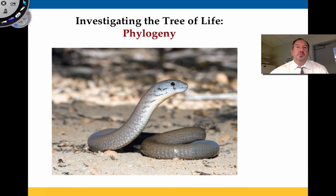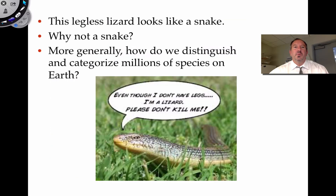Take a look at this creature. If you were looking at this you might think it looks like a scary snake, but in fact it's not a snake — it's a scary-looking lizard. What makes something a snake? What makes something a lizard? What makes something a mammal? How do we classify these things? This legless lizard looks like a snake. More generally, how do we distinguish and categorize the millions of different species on planet Earth?